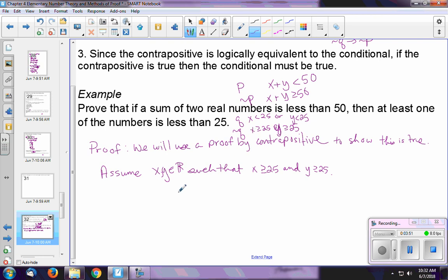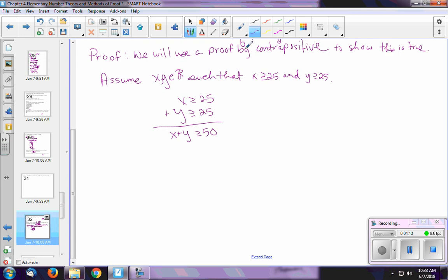So take for a moment X greater than or equal to 25, and add that to Y is greater than or equal to 25. That gives you X plus Y is greater than or equal to 50, which is, in fact, what we were trying to show. So this proof really is not very time consuming. It took probably more time for us to identify the contrapositive and state that that's what we were using.